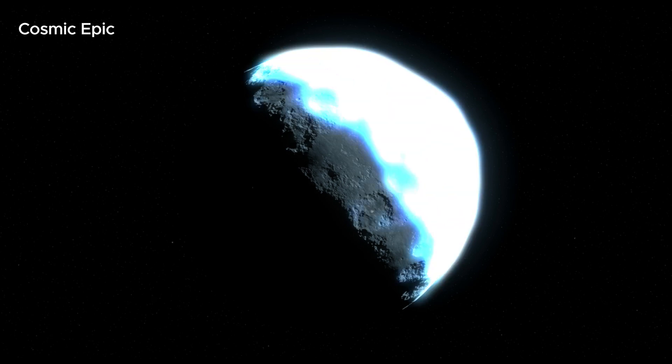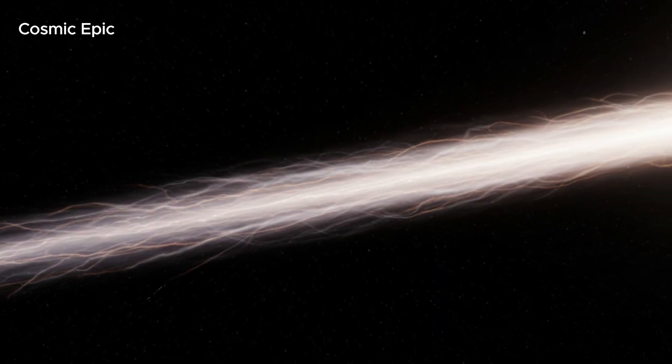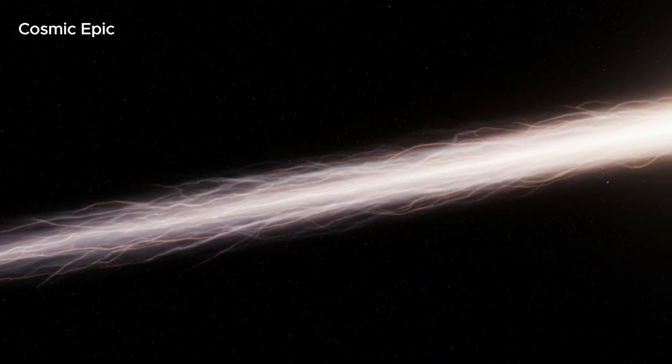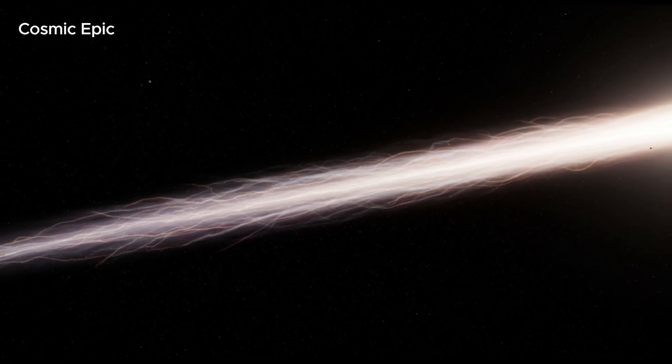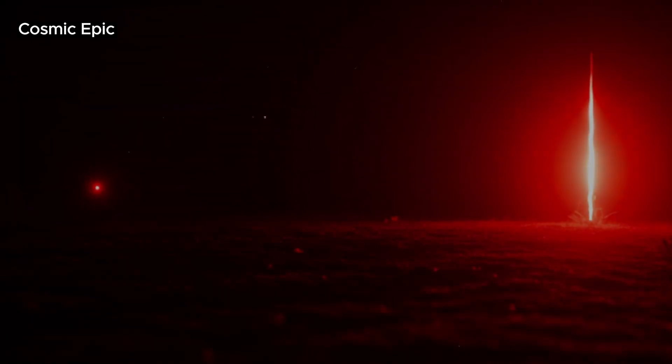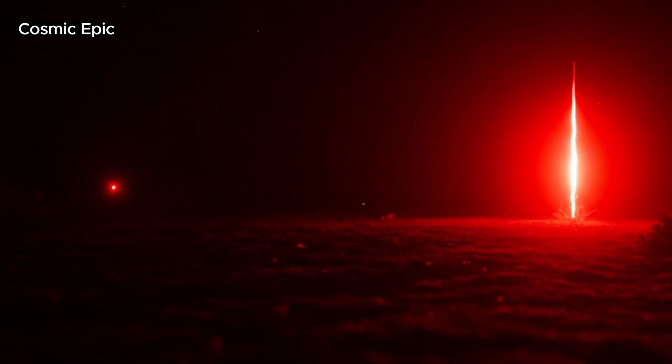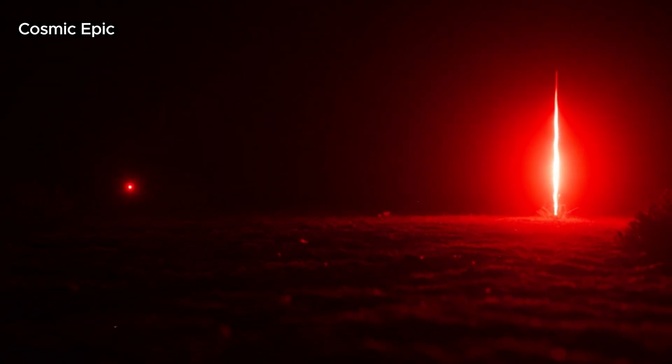scientists realized the truth. This was no ordinary object. It was hyperbolic, on a one-way path from deep space. It wasn't from here. It was the third trespasser. They named it 3i/Atlas, and almost immediately, the warnings began.